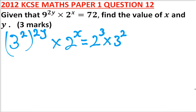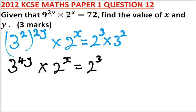So once you get there, you open the bracket. You have 3 to the power 4y multiplied by 2 to the power x is equal to 2 to the power 3 multiplied by 3 to the power 2.